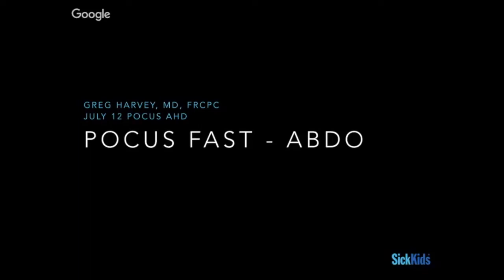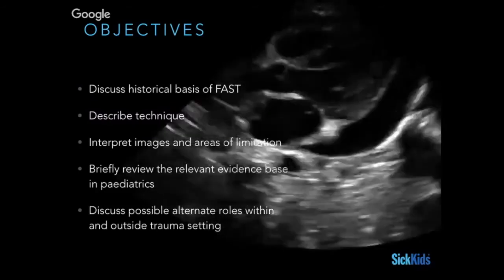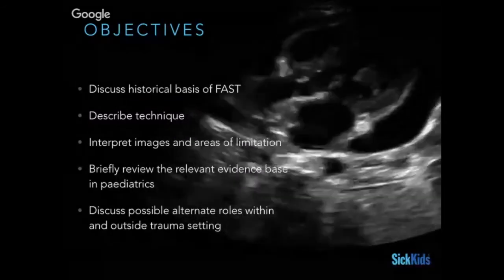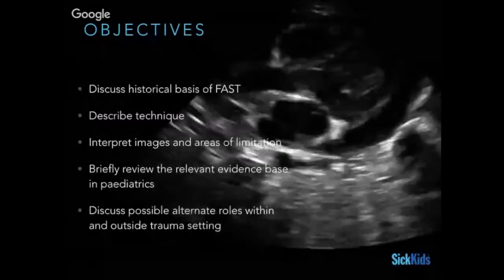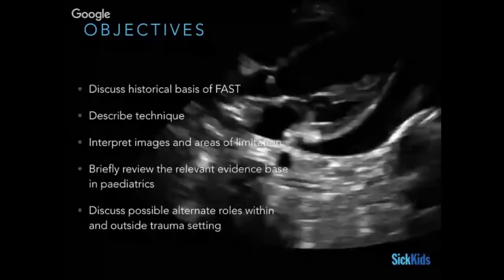It's one of the most studied areas, and in particular for kids, the evidence is quite contrarian to doing the FAST in a lot of regards. We'll talk about why we still think the FAST is a useful test and where it may fit, which is becoming more clear as the evidence mounts. We'll cover the historical basis, technique, image interpretation, limitations, the relevant pediatric evidence base, and possible alternate roles within and outside the trauma setting.